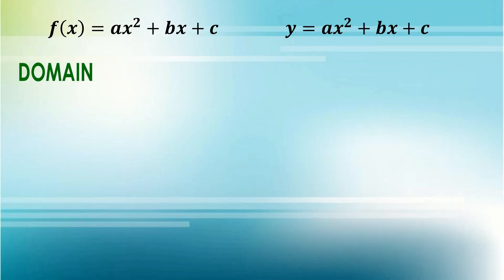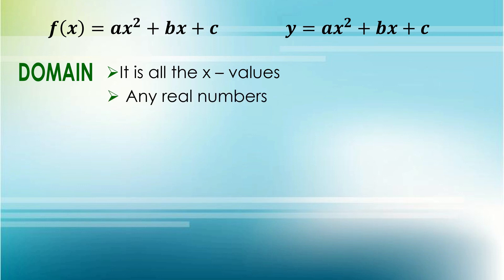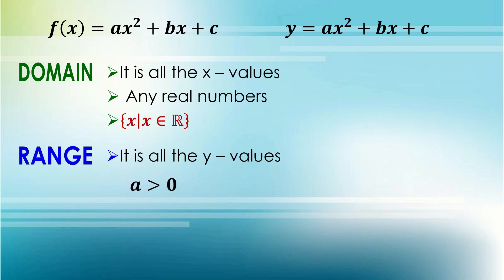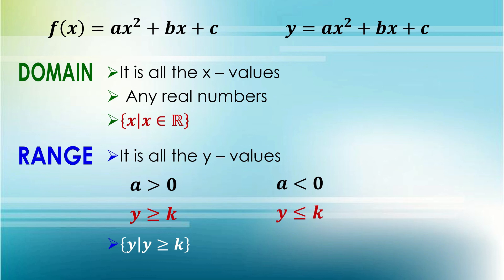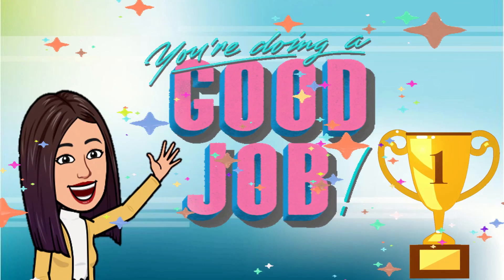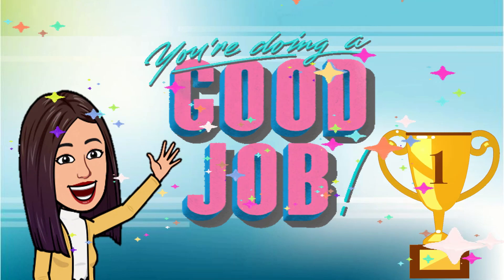That's it for our video. Remember that the domain of a given quadratic function is all the x values. The domain will always be any real numbers, with the notation: x such that x is an element of any real numbers. As for the range, it is all the y values. If a is positive or greater than 0, then y is greater than or equal to k, with the notation: y such that y is greater than or equal to k. If a is negative or less than 0, then y is less than or equal to k, with the notation: y such that y is less than or equal to k. I hope you learned something today. Thank you for watching. See you again in my next video!